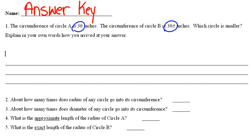The circumference of circle A is 30 inches. That's pretty self-explanatory. The circumference of circle B is 30 pi. Pi is approximately 3. 30 pi is the same as 30 times pi. If pi is approximately 3, then 30 times pi will be approximately 90.